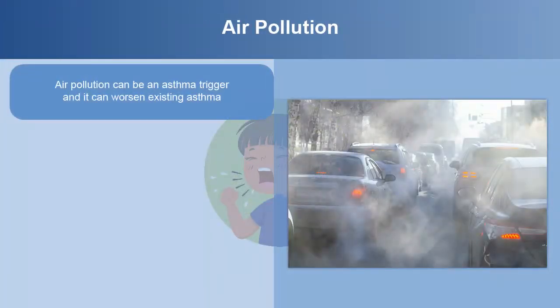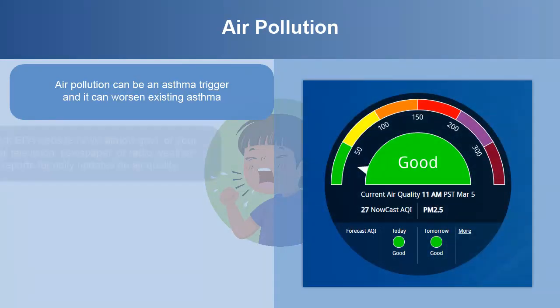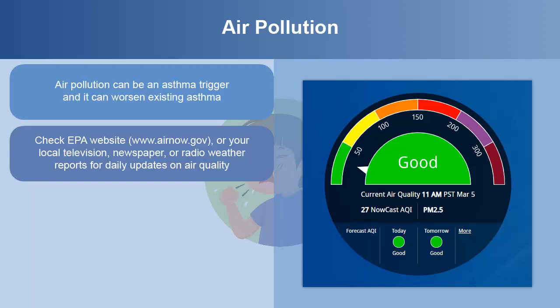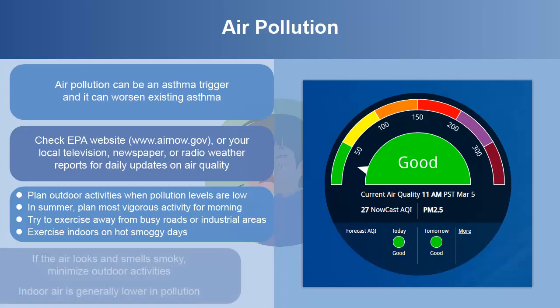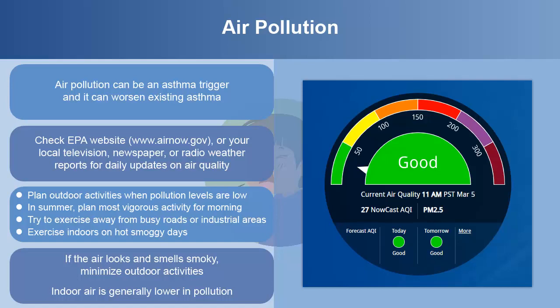Air pollution can be an asthma trigger and it can worsen existing asthma. Check the EPA website or your local television, newspaper, or radio weather reports for daily updates on air quality. Plan outdoor activities when pollution levels are low. In summer, plan most vigorous activity for morning. Try to exercise away from busy roads or industrial areas. Diesel exhaust is a well-known asthma trigger. Exercise indoors on hot, smoggy days. If the air looks and smells smoky, minimize outdoor activities. Indoor air is generally lower in pollution.